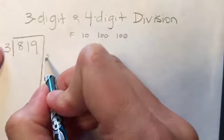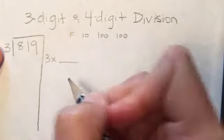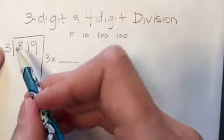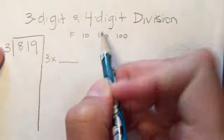So first I'm gonna start off and I'm gonna say, well, 3 times what is as close as I can get to 819? I don't really know any facts that are gonna get me there. So I'm gonna start, let's say, in the hundreds place since there's an 8 in the hundreds place. I'm gonna start with 100.